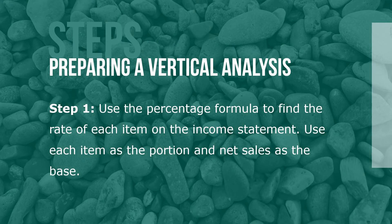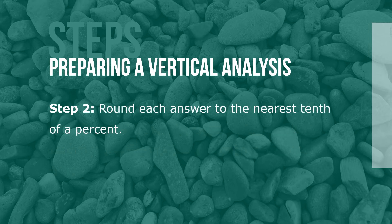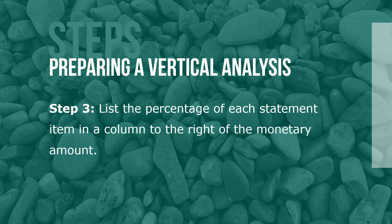Here are the steps to preparing a vertical analysis. Step 1: use the percentage formula to find the rate of each item on the income statement, using each item as the portion and net sales as the base. Step 2: round each answer to the nearest tenth of a percent. Step 3: list the percentage of each statement item in a column to the right of the monetary amount.